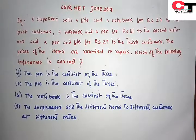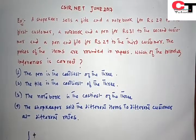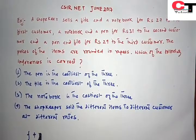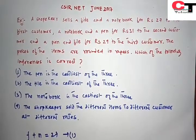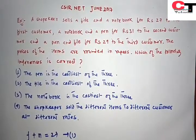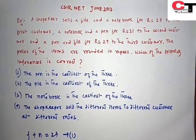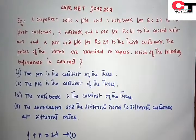Let's see what is given in the question. To the first customer, the shopkeeper sells a file and a notebook at Rs.27. To the second customer, he sells a notebook and a pen at Rs.31.